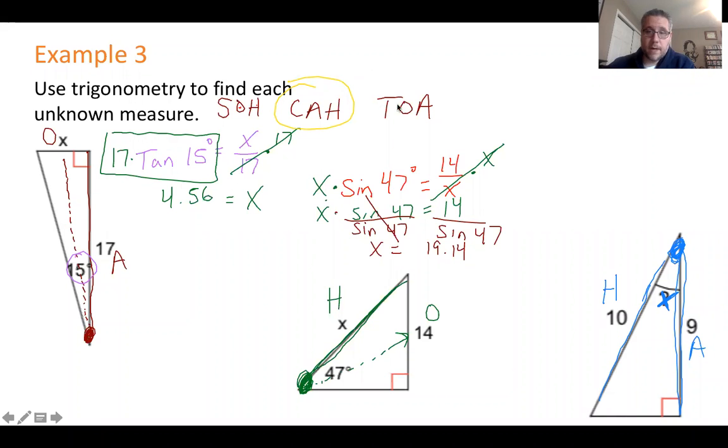So we will write it out. The cosine starting from the unknown angle x is equal to adjacent on top, hypotenuse on the bottom. So that would be 9 over 10. Adjacent over hypotenuse. Now, how do we find the angle?